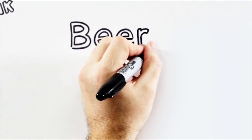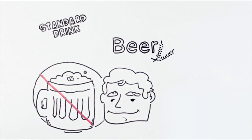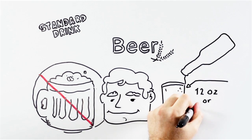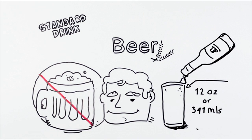What about beer? Is it that keg-sized draft beer that's as big as your head? A standard drink of beer is 12 ounces or 341 milliliters, which is found in a typical bottle of beer.